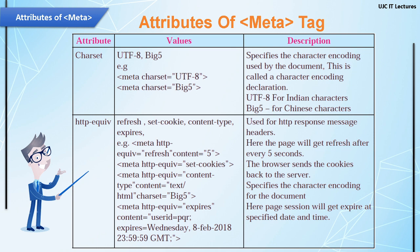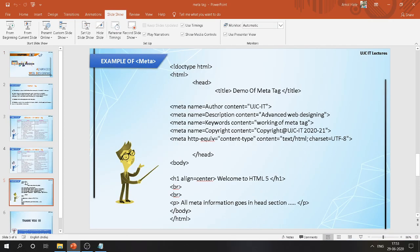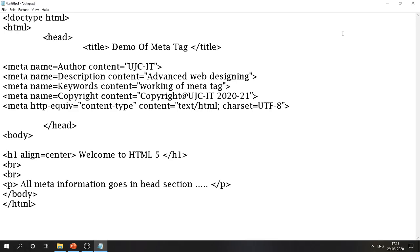Now that we've learned the meta tag in detail along with its attributes, it's time to learn how to use meta tag in actual HTML code. Here I have prepared a demo code to help you understand. I've typed the code in a small document for you. The code starts from DOCTYPE html, followed by html, head, and title. The title of the web page is 'Demo of Meta Tag'.